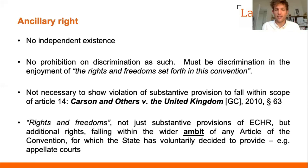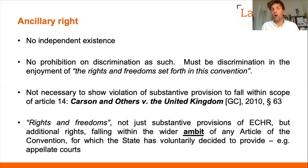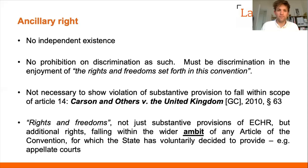Where Article 14 talks about rights and freedoms, it is not just talking about the substantive provisions of the convention but also additional rights falling within the wider ambit of those provisions — including things the state has voluntarily decided to provide. A good example is appellate courts: there's nothing in Article 6 requiring the state to provide them, but where states choose to do so, that falls within the ambit of Article 6, and any discriminatory treatment in access to such courts would engage Article 14.